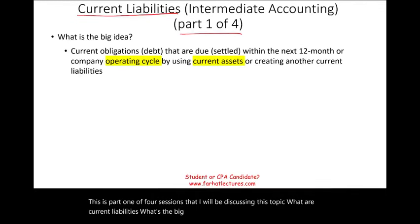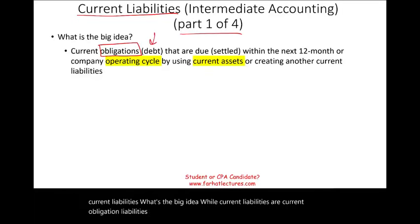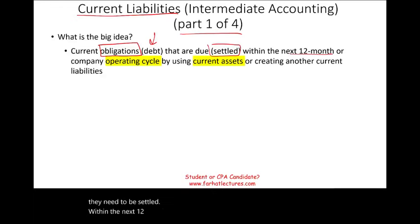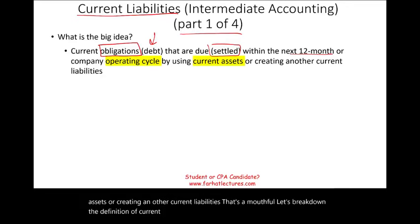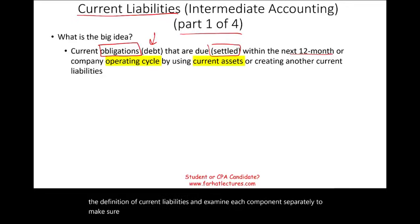Current liabilities are current obligations. Liabilities are obligations — simply put, a debt that is due, meaning it needs to be settled within the next 12 months or the company's operating cycle by using current assets or by creating another current liability. Let's break down this definition and examine each component separately.